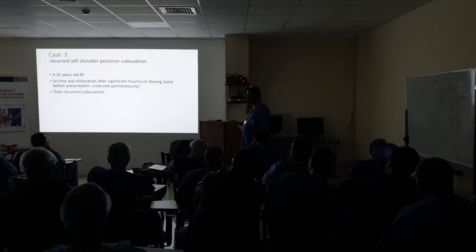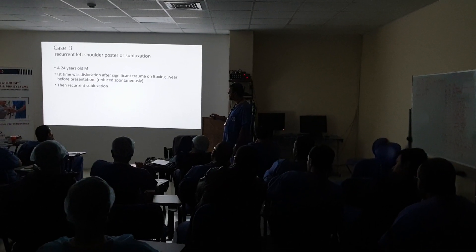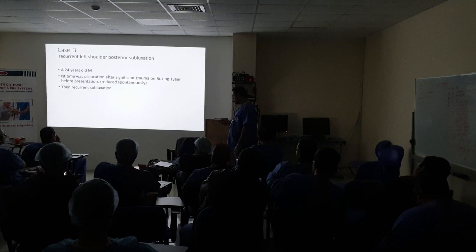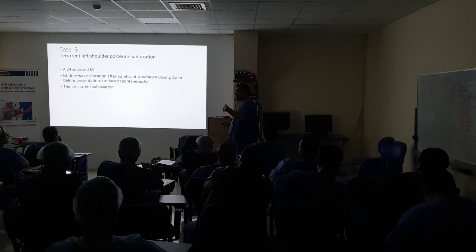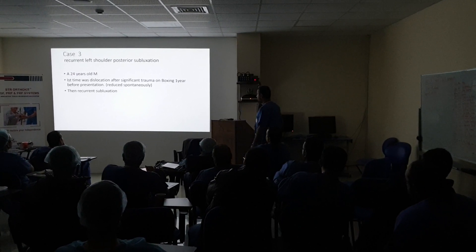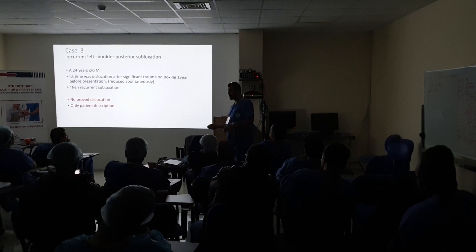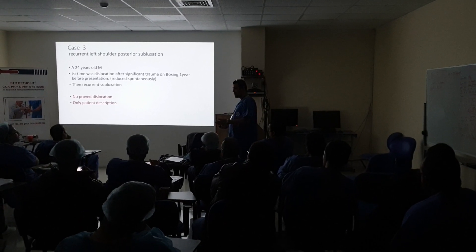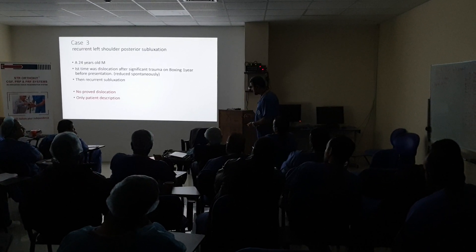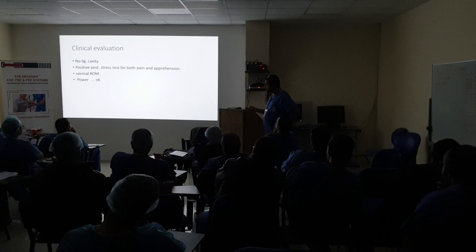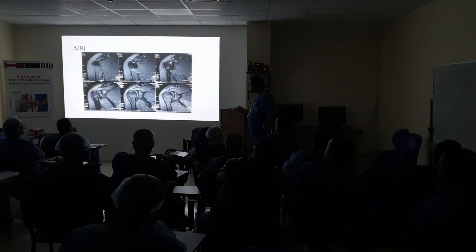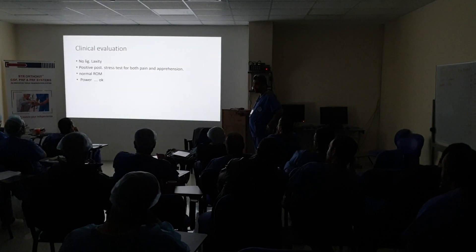This is a case of recurrent posterior subluxation. A young male patient, 24 years old, who had his first dislocation after boxing. After that, he developed recurrent posterior subluxation of the shoulder, but with no proven dislocation on X-ray or imaging, no ER report, only the patient's description. By examination, there was multidirectional laxity with normal range of motion and power, but the posterior stress tests were painful and positive for pain and apprehension.